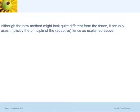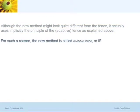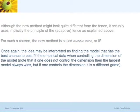Now here's the link between this method and the fence method. It doesn't seem to have a fence — where is the fence? You pick the model that fits best within each dimension, then calculate the empirical probability. It doesn't seem to involve the fence inequality anywhere. So why is it still called the fence method? The reason is it actually uses implicitly the principle of the adaptive fence. For that reason, the new method is called the invisible fence, or IF.